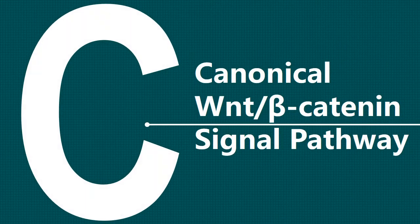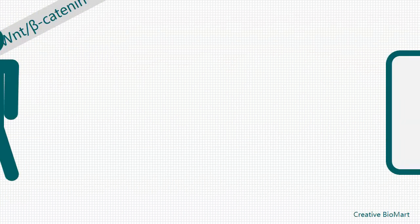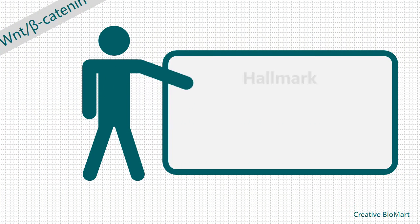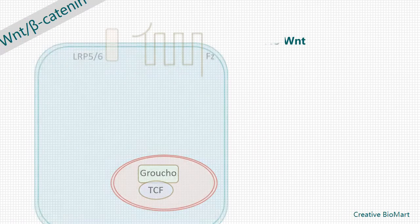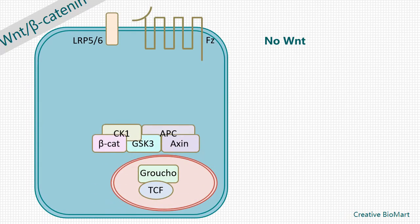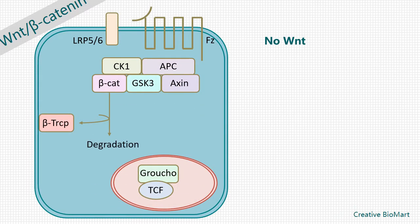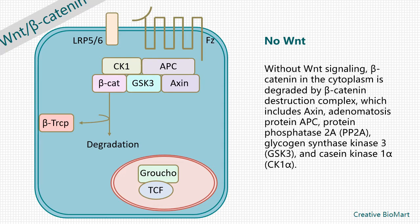The first signal pathway is the WNT-beta-catenin signal pathway. The hallmark of the WNT signal pathway is the accumulation and translocation of adhesion-related protein beta-catenin within the nucleus. Without WNT signaling, beta-catenin in the cytoplasm is degraded by the beta-catenin destruction complex, which includes axin, adenomatous polyposis coli protein APC, protein phosphatase 2A, glycogen synthase kinase 3, and casein kinase 1α.